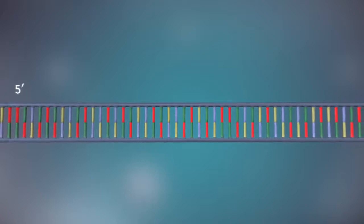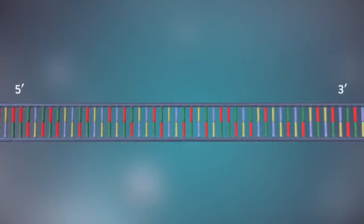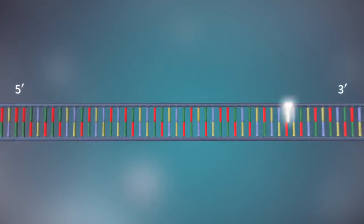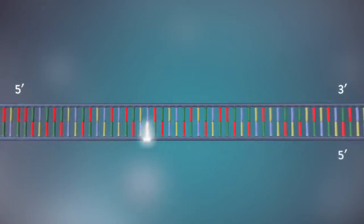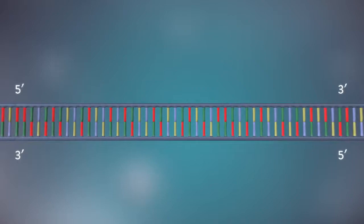Each strand has a five prime end and a three prime end. The two strands run in opposite directions. This determines how each strand of DNA is replicated.